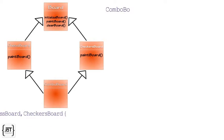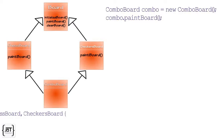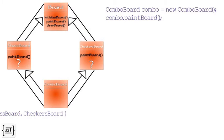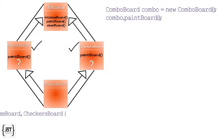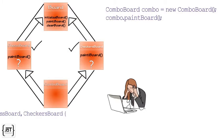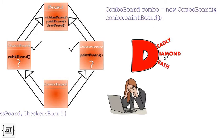Now, when an object of ComboBoard is created and used for calling the paint method, which paint method will be called? As you see, this creates a diamond-like effect because of which there is an ambiguity as to which paint should be called. The code may get stuck. This is known as the deadly diamond of death.